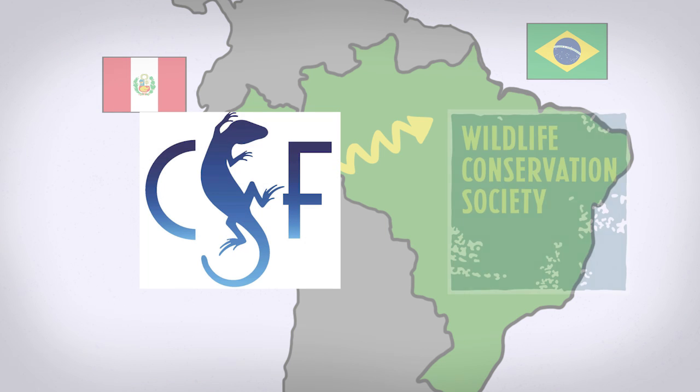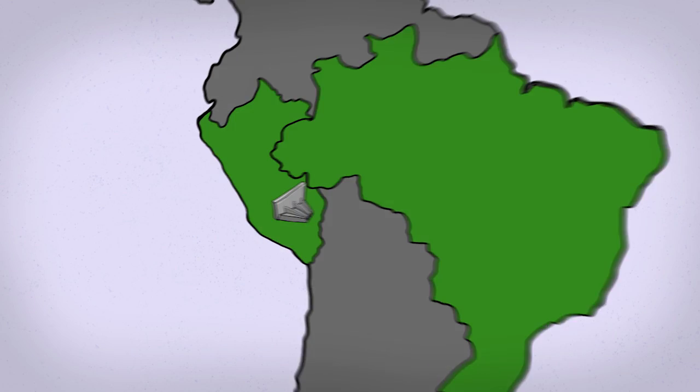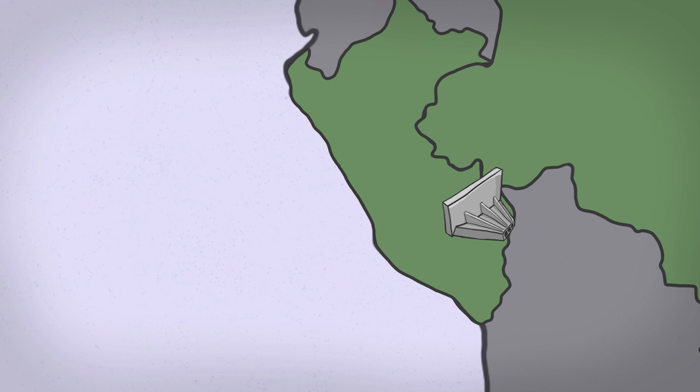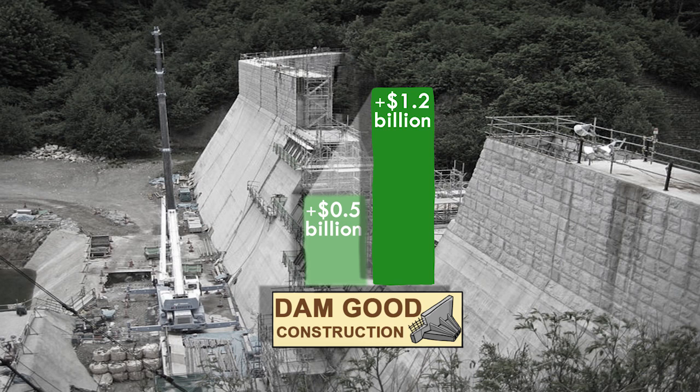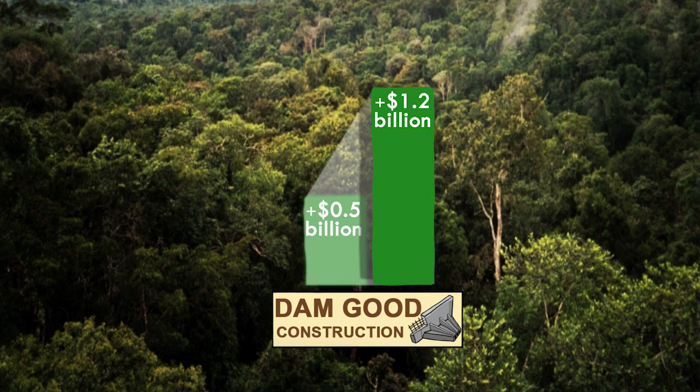Conservation Strategy Fund and the Wildlife Conservation Society looked at one of the plans for a hydroelectric plant on the Inambari River. The firm that would be developing the dam would earn between 0.5 and 1.2 billion dollars for the development, but in Peru about 96,000 hectares of Amazon forests would be deforested and 4,000 people displaced.